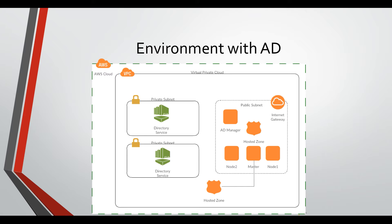In our public subnet we'll be adding a Windows machine, and we will attach this Windows machine to the domain so we can use it to control and manage the Active Directory. Keeping the Active Directory subnets private is preferred since only our OpenShift environment needs to access these servers. Now switching to my AWS console, we will start building this Active Directory.